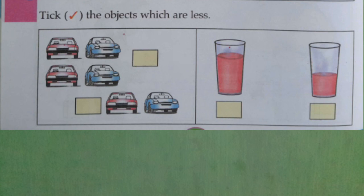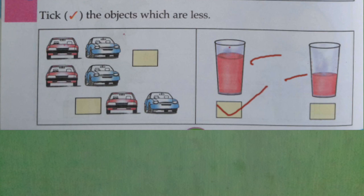There are two glasses of liquid. Which is more and which is less? The left side is more. The liquid color is red. Which height is more, that is more; which height is less, that is less. So you have to put the tick on the left side glass. Thank you.